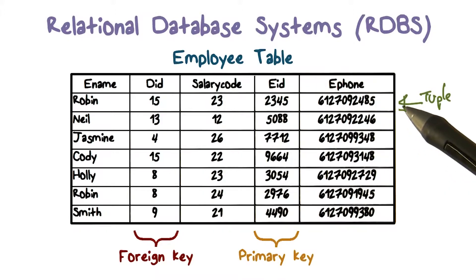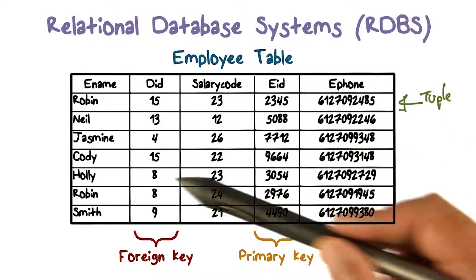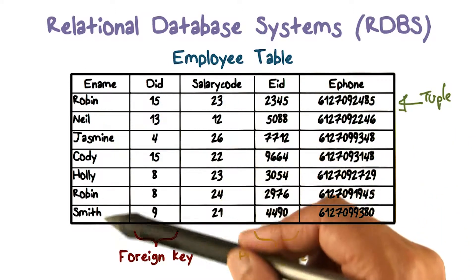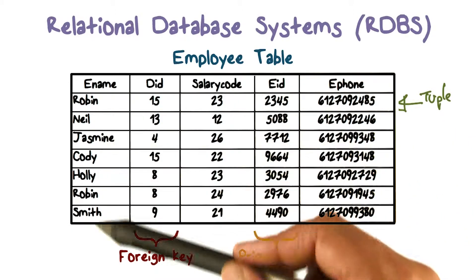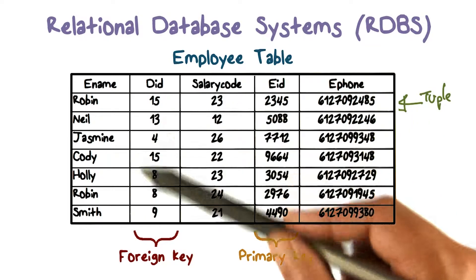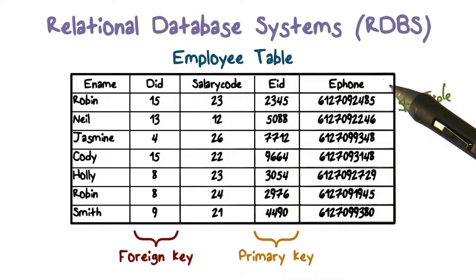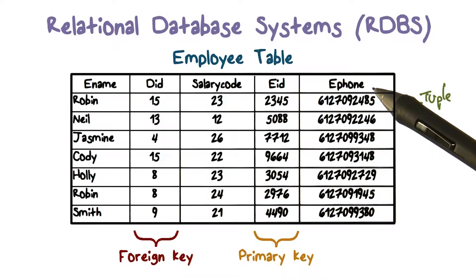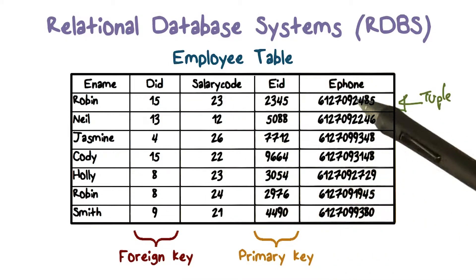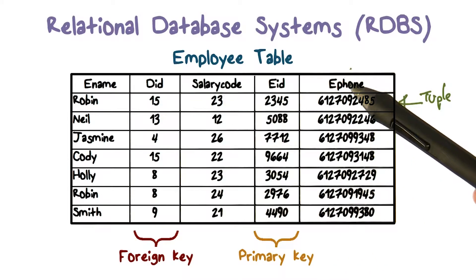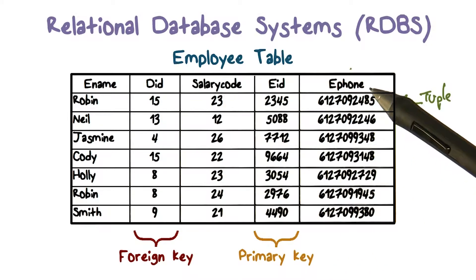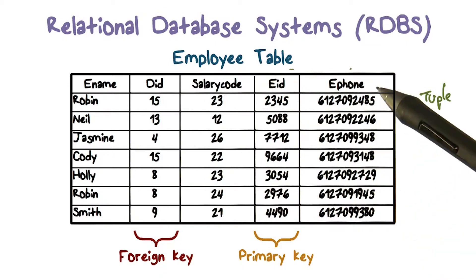As you can see, for each employee, that information makes up a tuple in the table. The collection of those, structured and organized this way, is what makes a table. The various attributes, which define what's stored in this table, are based on this schema.